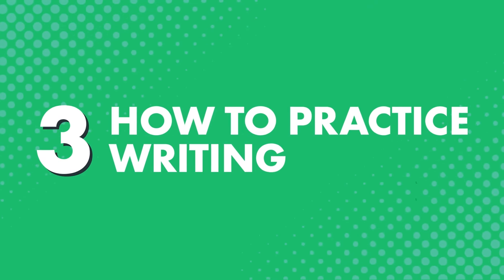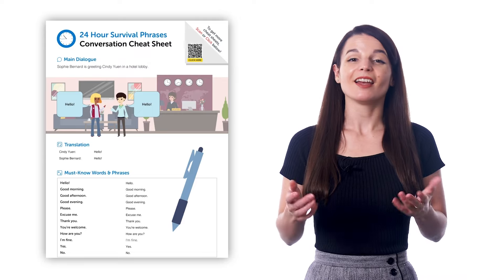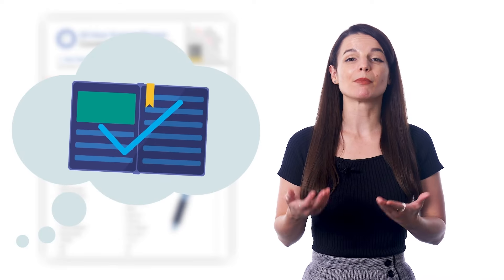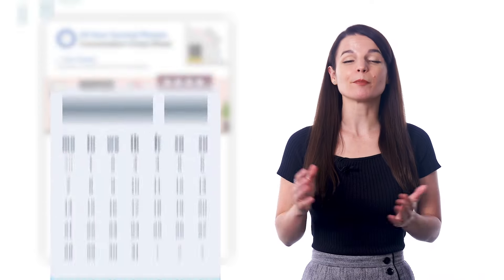Three: how to practice writing. The easiest way to practice writing is to simply copy out the words on the cheat sheet into a notebook. You can also print out the cheat sheets and write on them directly. As a bonus, you get to remember all of the words and phrases better. Be sure to practice a few times a day every day for the language to really stick.